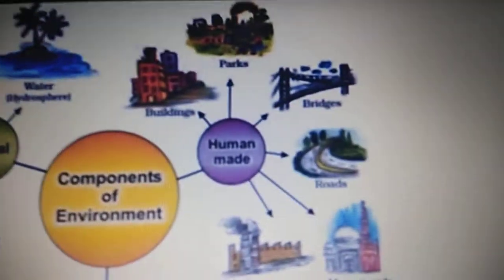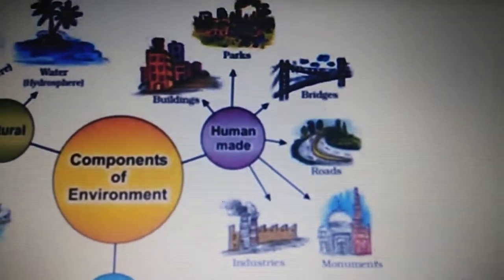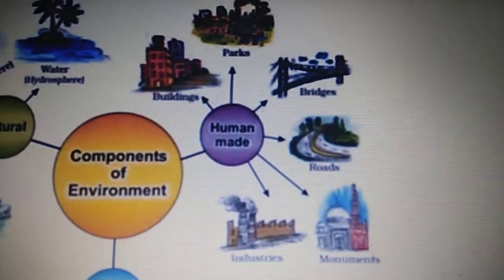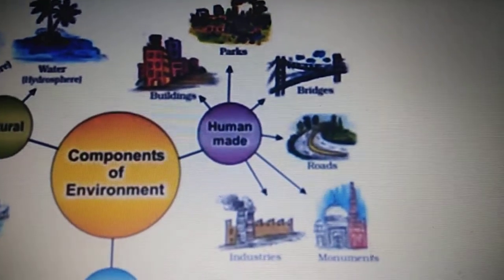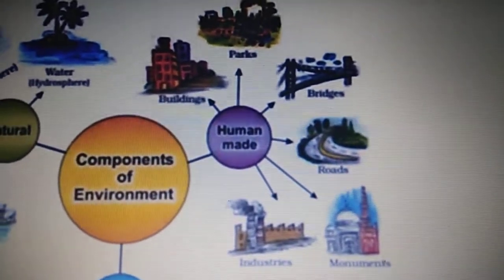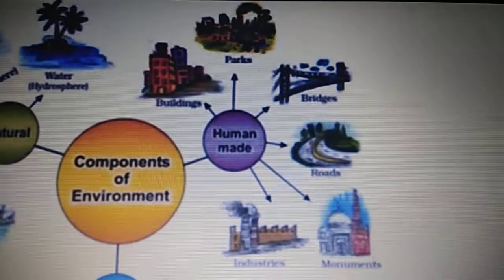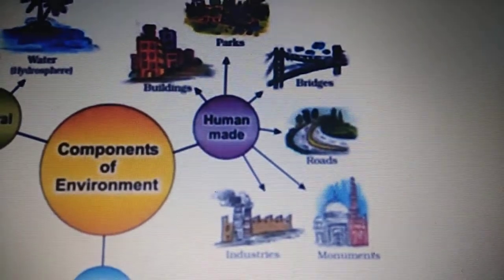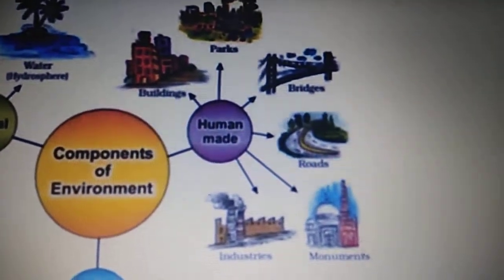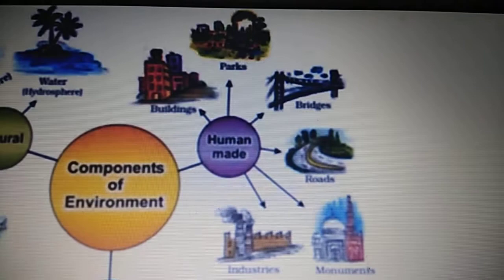Now we come to the next component of the environment: human-made. Humans make many things. What does he make? He makes buildings, parks, bridges, roads, monuments, and industries — according to his needs, he makes them.